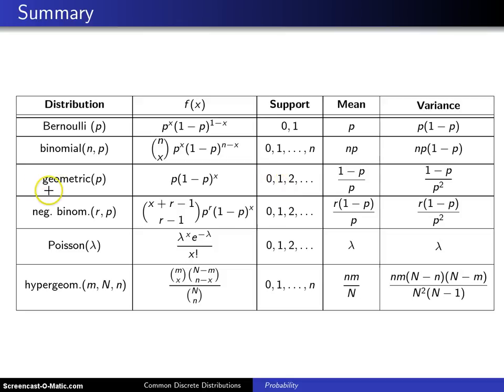There is a little g here. If this were geometric with a capital G, then the support would start at 1, and it would model the trial number of the first success in repeated independent Bernoulli trials.